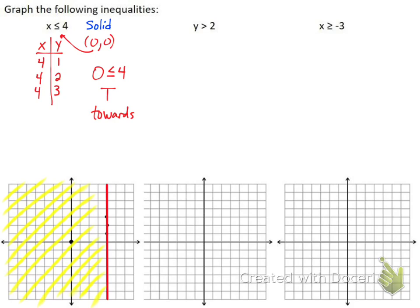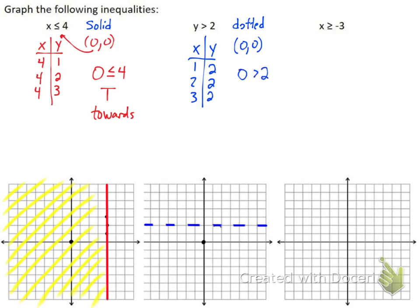Same thing with the second problem. My xy chart has y always equal to 2 and x is whatever I want — 1, 2, 3 — so I can plot those points: (1,2), (2,2), and (3,2). When I look at my inequality sign, there's no line underneath of it, so I know this one's going to be a dotted line. I draw a horizontal dashed line, then plug in test point 0, 0. I get 0 is greater than 2 — the alligator is not eating the bigger number, so it's false. False means far away, so I'm shading away from my test point, which ends up being above.